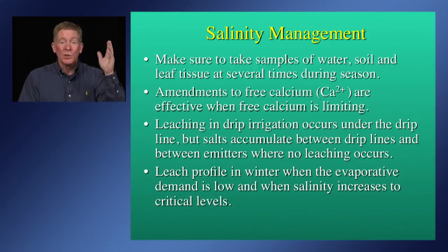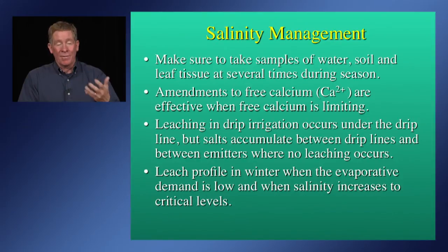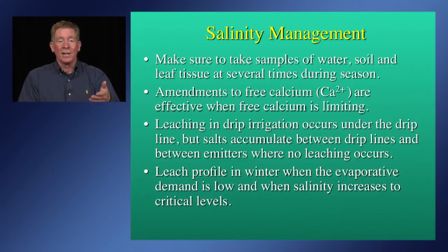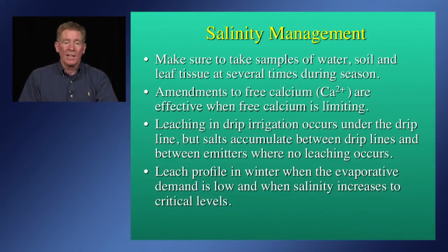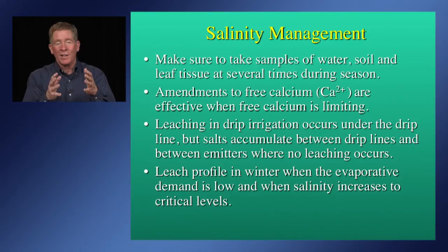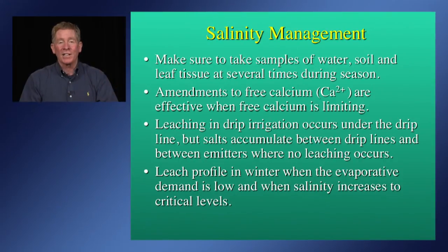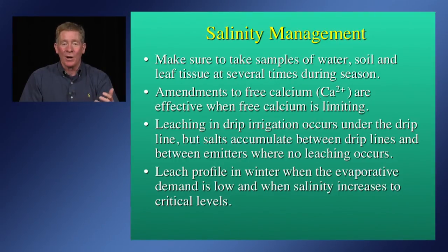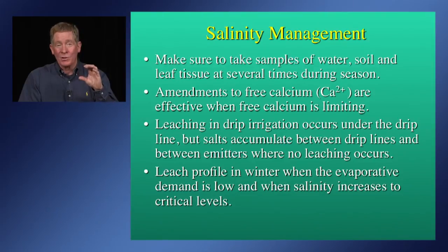Amendments to make free calcium (Ca2+) are effective when free calcium is limiting — gypsum applications are effective when you don't already have enough free calcium, and adding gypsum won't help if you already have adequate levels. Similarly, adding acid is most effective when free calcium is limited. Under drip irrigation, leaching occurs below the drip line but salts tend to accumulate in between emitters, making the leaching fraction concept more complicated for drip systems. Leaching should be done in winter when evaporative demand is low, or when salinity in the active root zone reaches critical levels.